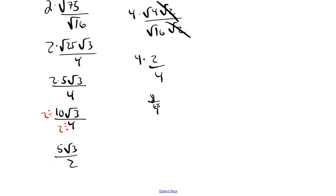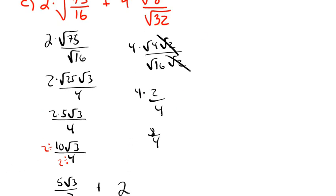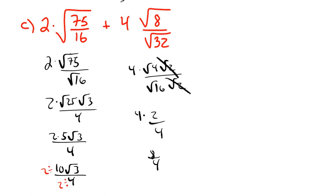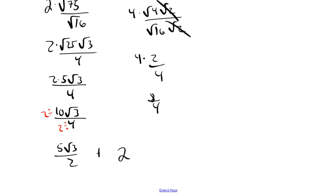8 and 4 have a common factor — you can see the 4 cancels. 4 goes into 8 two times, so the right side simplifies to 2. So the whole expression so far is 5 radical 3 over 2, plus 2.